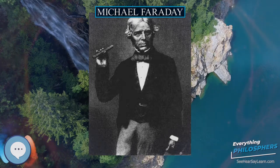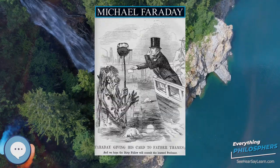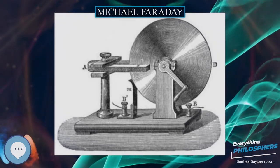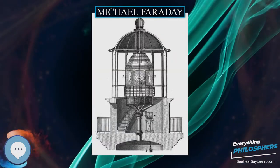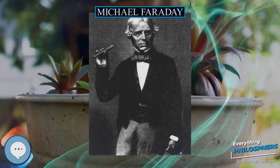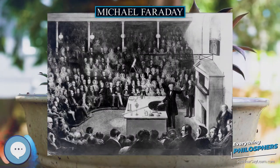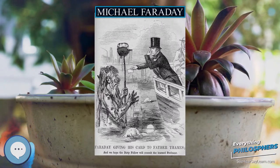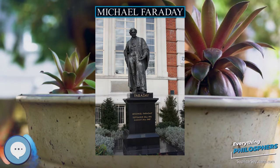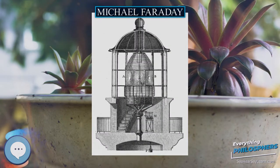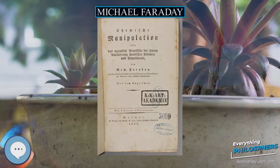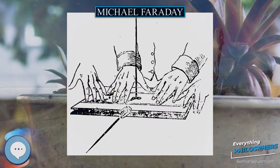In 1813, when Davy damaged his eyesight in an accident with nitrogen trichloride, he decided to employ Faraday as an assistant. Coincidentally, one of the Royal Institution's assistants, John Payne, was sacked and Sir Humphry Davy was asked to find a replacement; thus he appointed Faraday as chemical assistant at the Royal Institution on March 1, 1813. Very soon Davy entrusted Faraday with the preparation of nitrogen trichloride samples, and they both were injured in an explosion of this very sensitive substance. When Davy set out on a long tour of the continent in 1813–15, Faraday went as Davy's scientific assistant and was asked to act as Davy's valet until a replacement could be found in Paris.